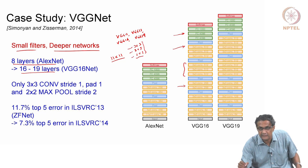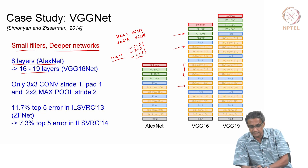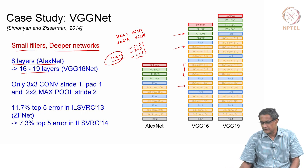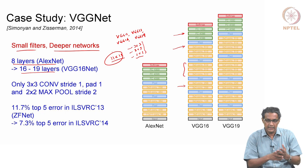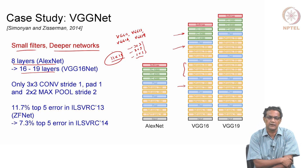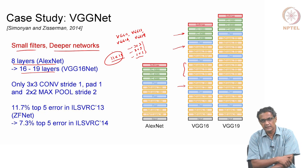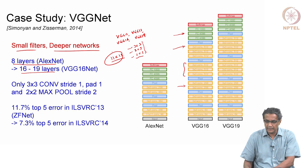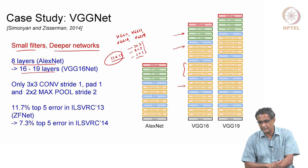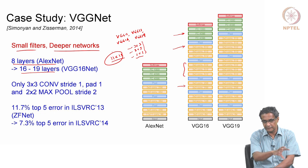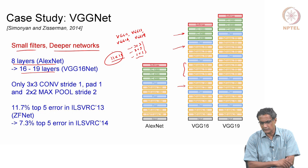The effective receptive field of three stacked 3×3 conv layers is 7×7. So even ZFNet's 7×7 filters can be replaced this way. Their argument was that instead of a large filter like 7×7 (which gives 49 unknowns), using 3×3 filters three times gives roughly half that number of unknowns. And it's not just about achieving a similar receptive field with fewer parameters — it also leads to improved accuracy.